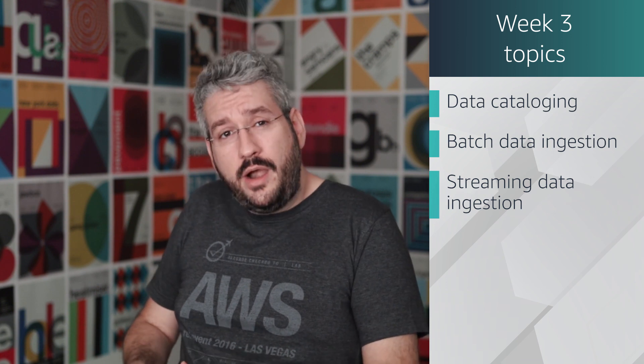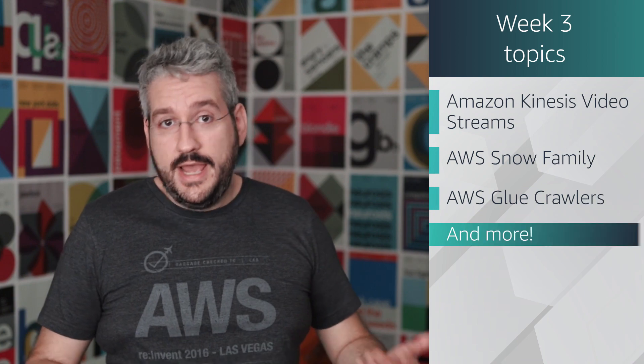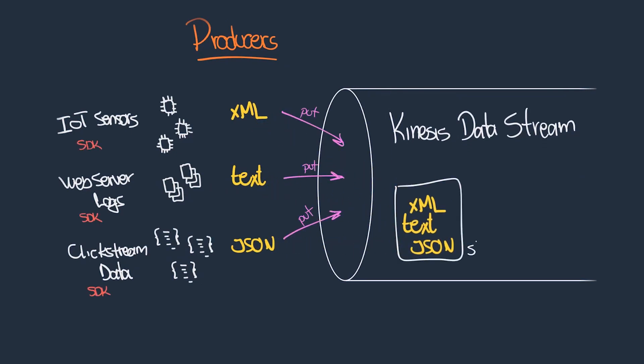During week three, we are going to ingest the rivers. In other words, we will begin to explore how to ingest data by talking about data cataloging, batch, and streaming data ingestion, and what are the AWS services used for doing it. Also on week three, we will dive deeper into the specifics of data cataloging and ingestion by exploring services like AWS Transfer Family, Amazon Kinesis Data Streams, Kinesis Firehose, Kinesis Analytics, Kinesis Video Streams, AWS Snow Family, AWS Glue Crawlers, and others. We will also talk about when is the right time to process data — is it before, after, or while data is being ingested? You will be able to easily identify scenarios regarding when to process data and match the most appropriate AWS services according to the specific scenarios.